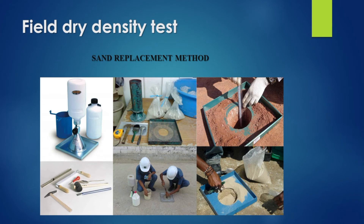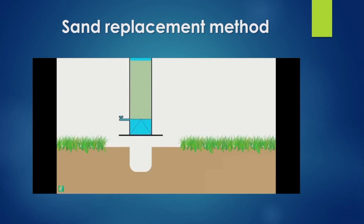We excavate the density of the soil. The hole volume is exact. We use a cylindrical jar filled with sand. With the known density of the sand, we can calculate the density.